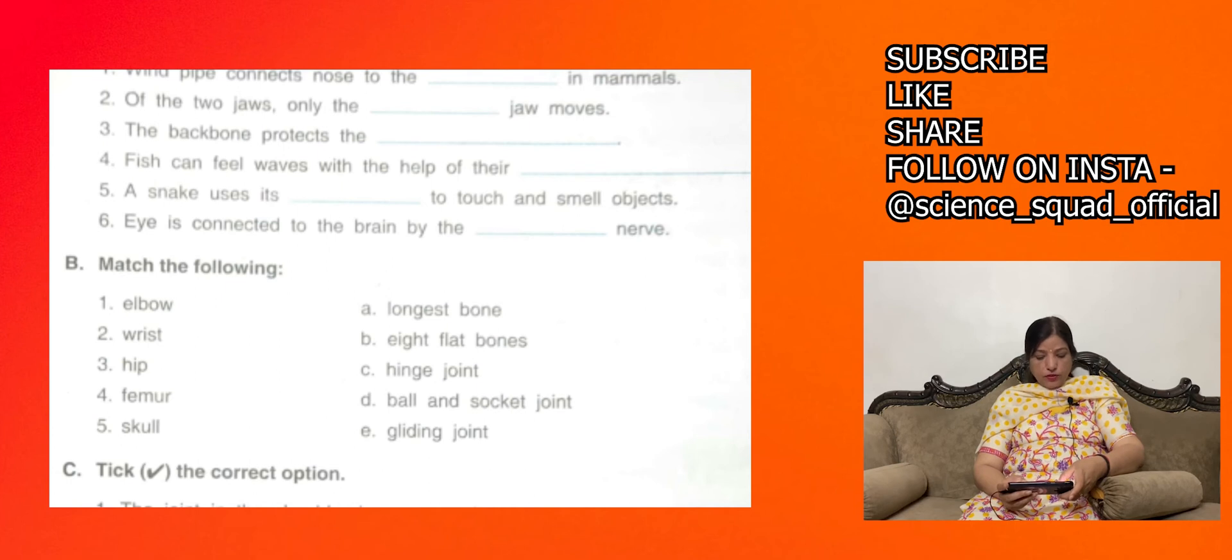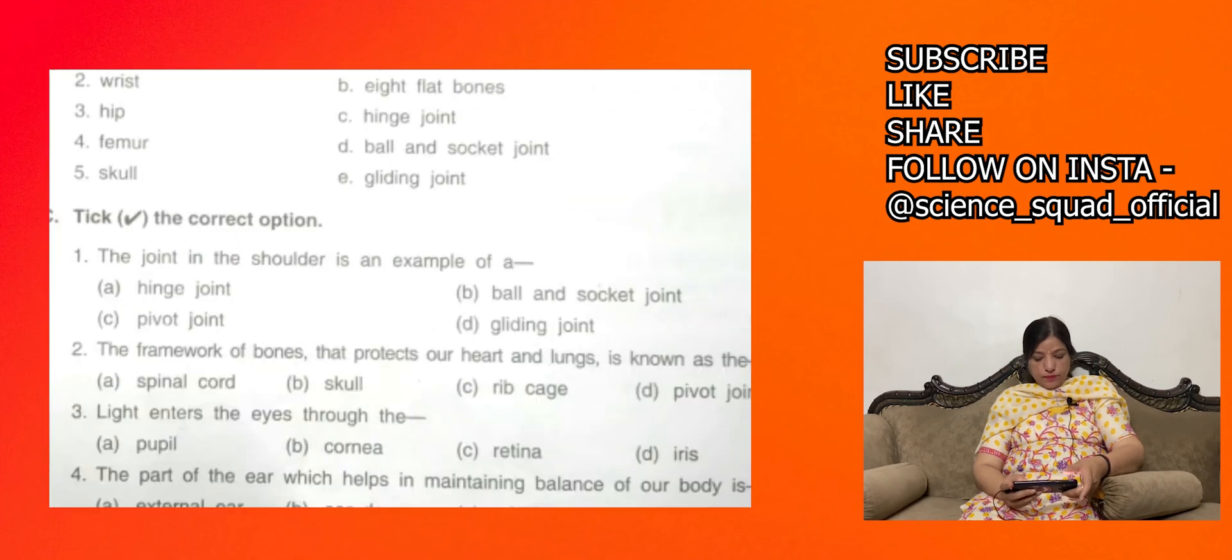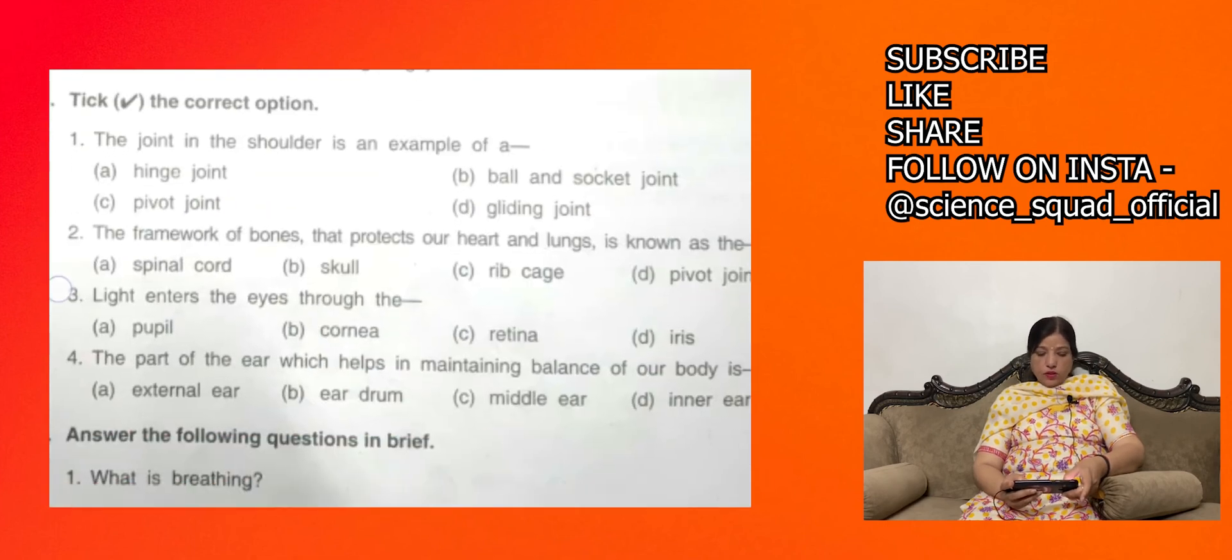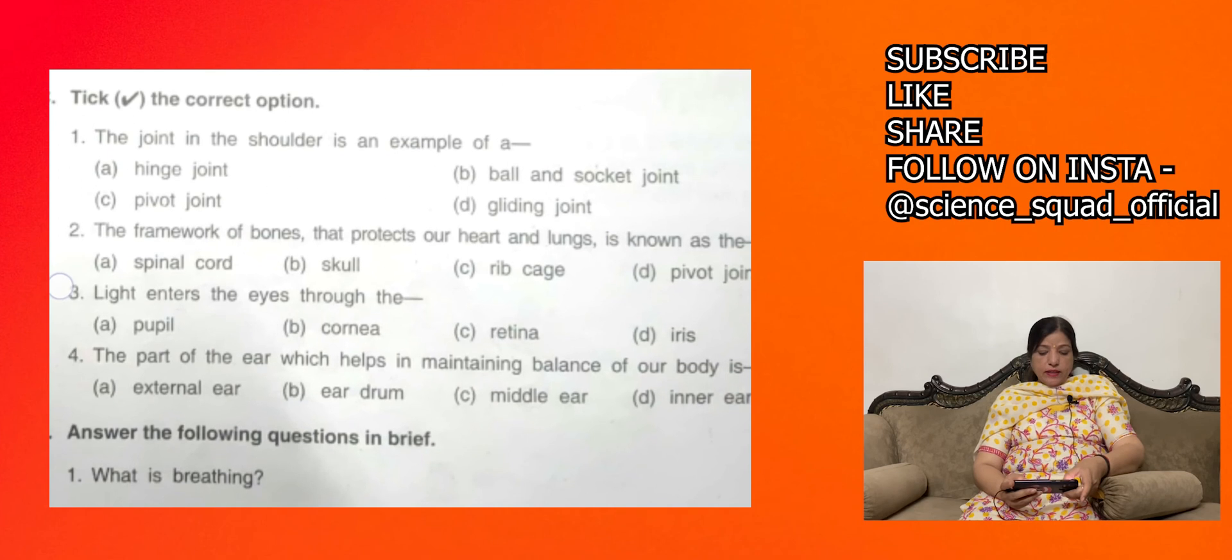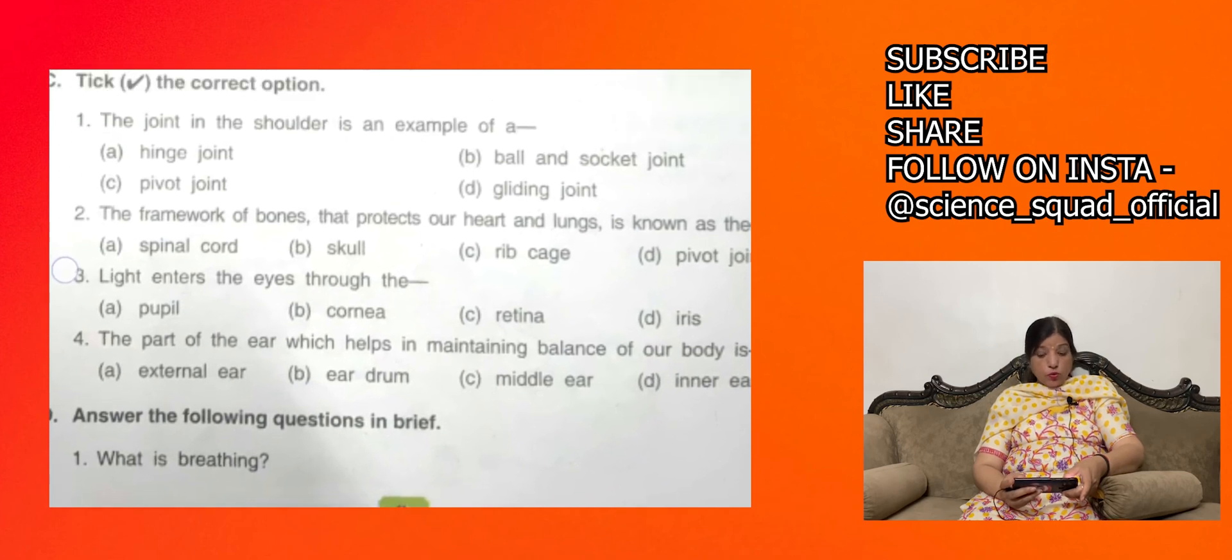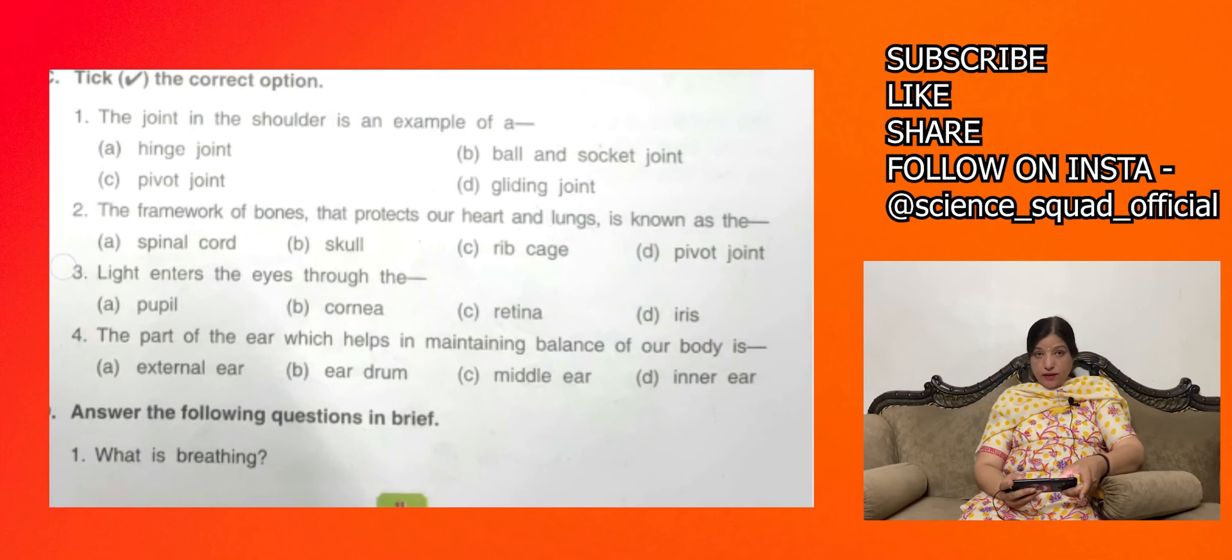Femur is the longest bone. Skull has eight flat bones. Tick the correct option. The joint in the shoulder is an example of - shoulder me jo joint hai, haa cricket khela tha na, haj apne - ball and socket joint.